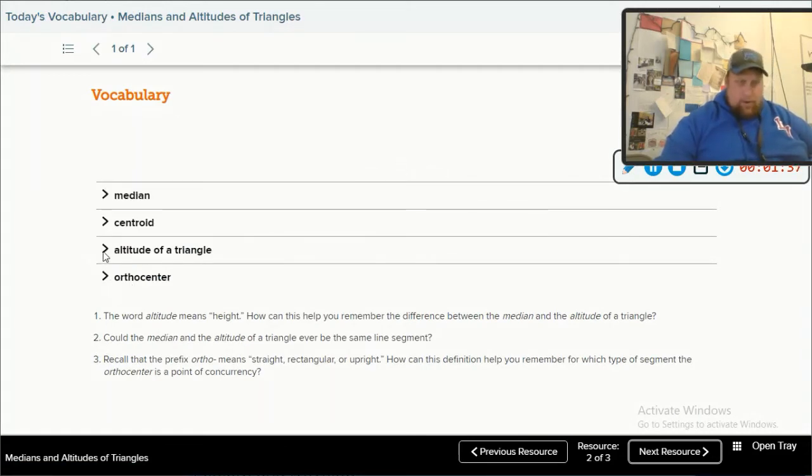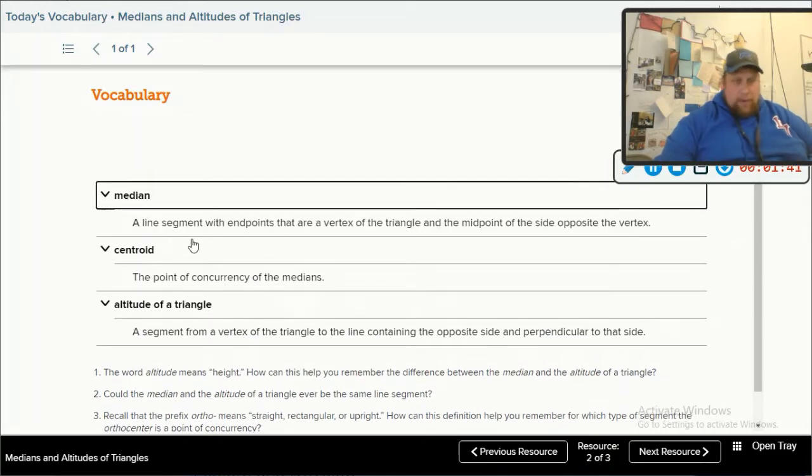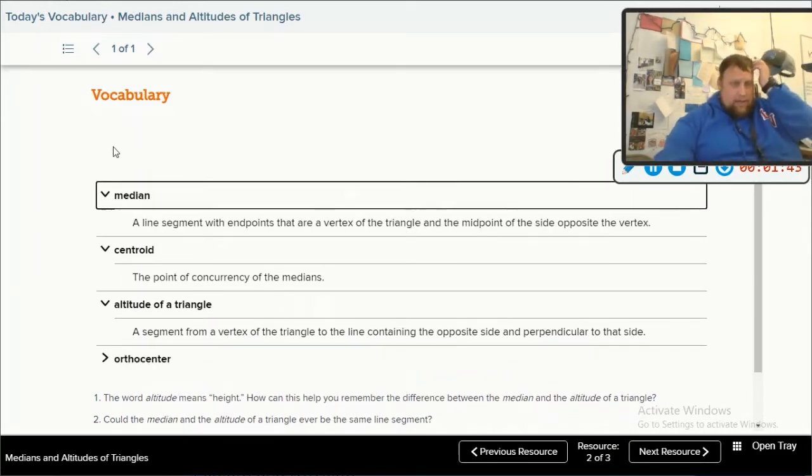So we're skipping orthocenter. You're welcome, trust me. You're welcome to look it up. We're not doing it right now. We are going to do median centroid altitude of triangle and median, right, a line segment with endpoints that are at the vertex of the triangle, and the midpoint of the opposite or the side opposite vertex. We'll talk more about that later. Just go ahead and write it down.